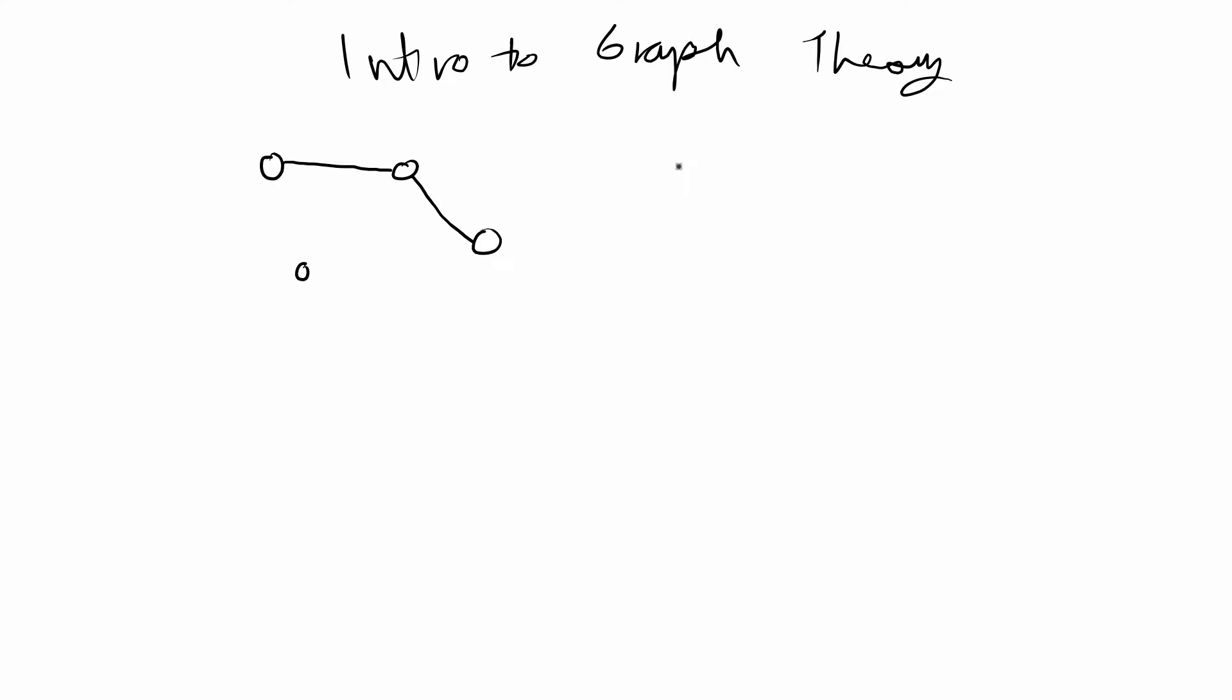Usually when you talk about graph theory you'll see a graph depicted and the objects are known as vertices, so they're depicted as dots or circles. And the relationships between the vertices are depicted as lines which are called edges.